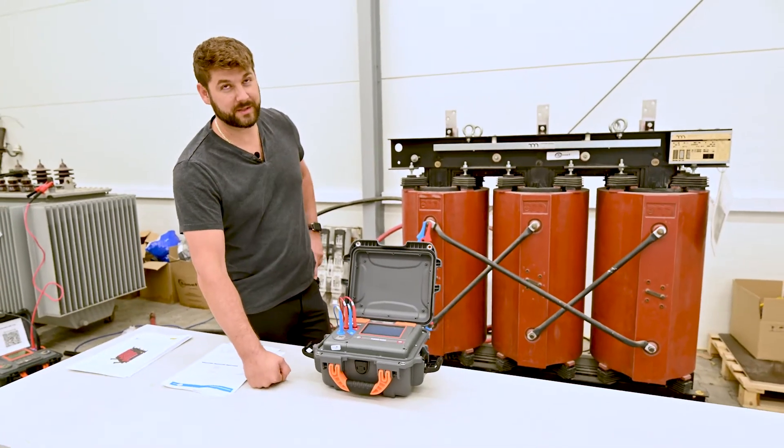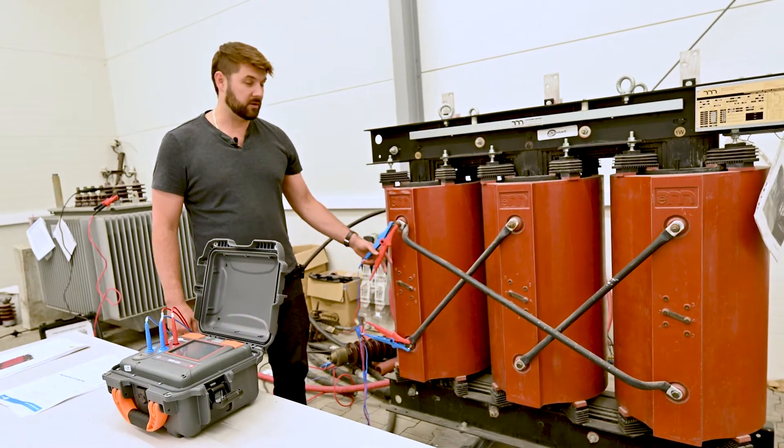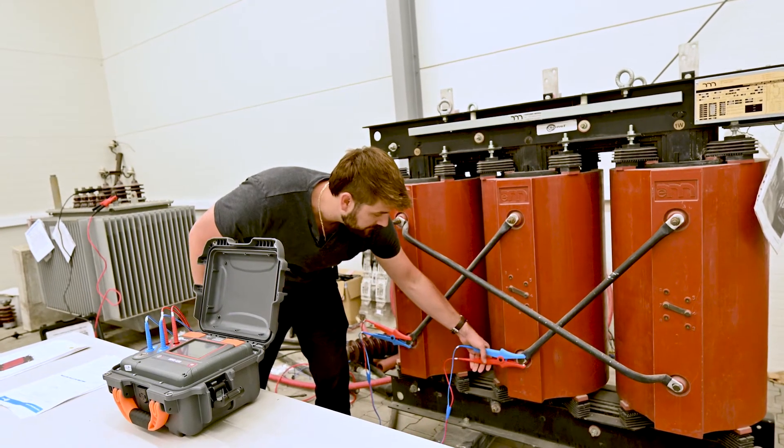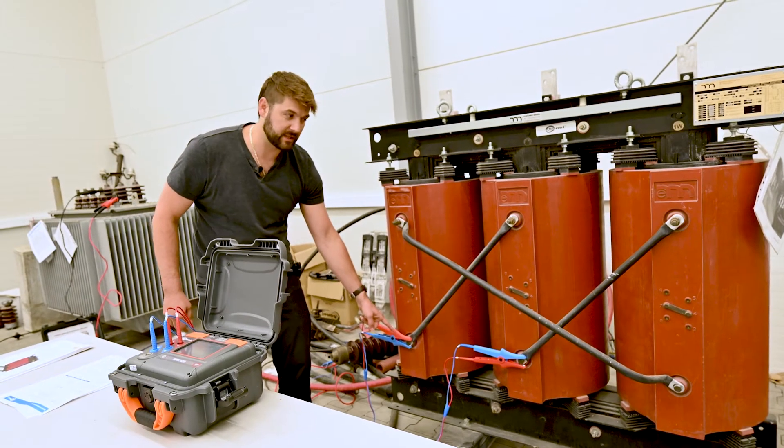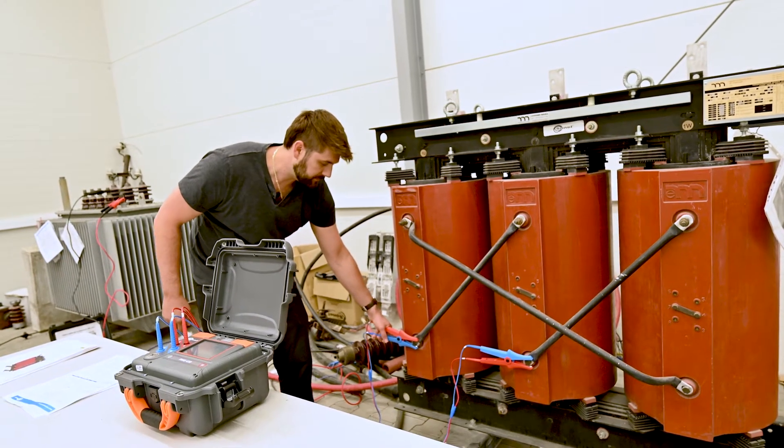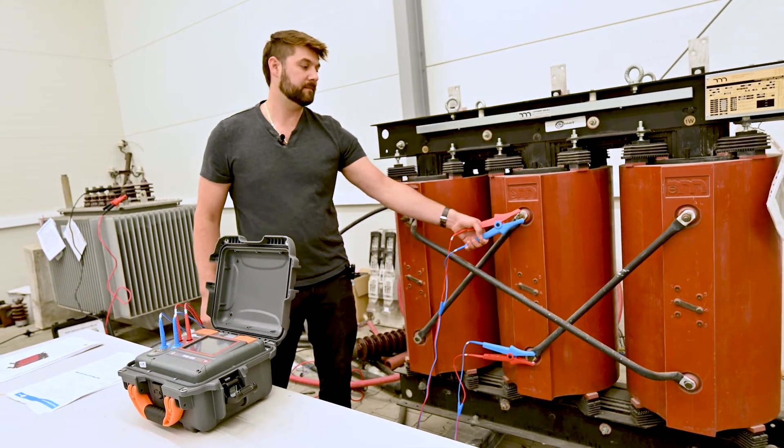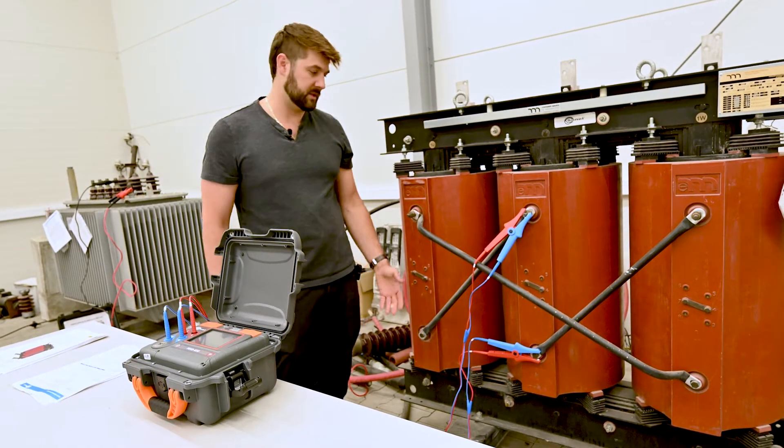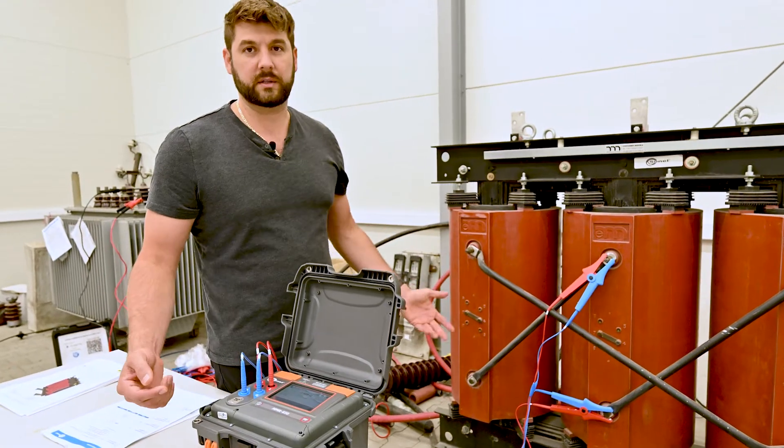Okay, 7.6 ohms. Going to go to the next phase. All I need to do is move this lead to here. We're going across this winding now. I can leave this here and I will include this bar in the measurement, but if I put it here, we exclude the bar. The bar has very low resistance compared to the winding, so either location is fine.